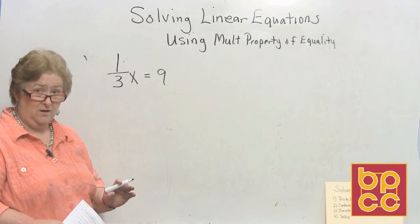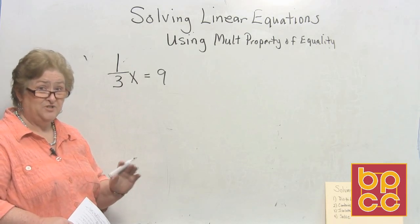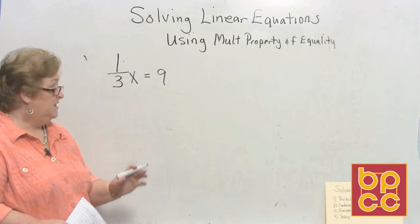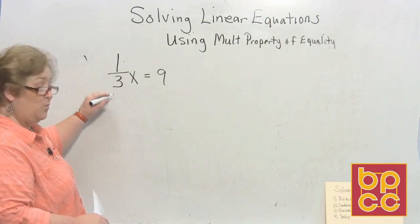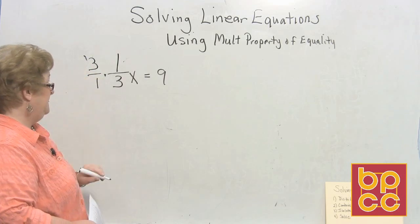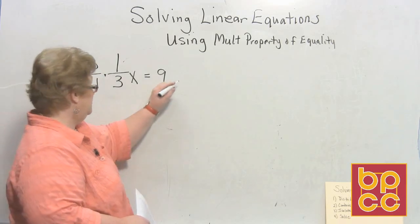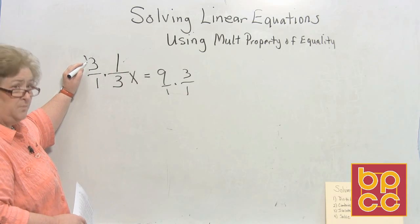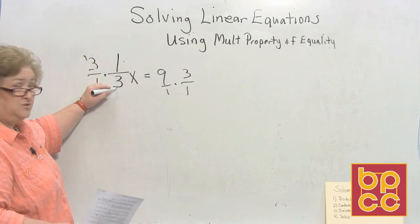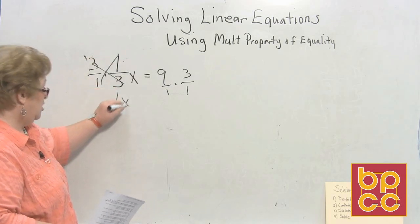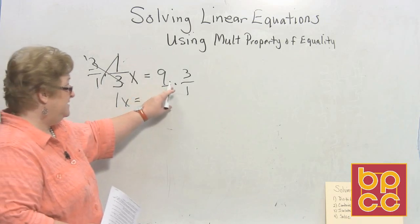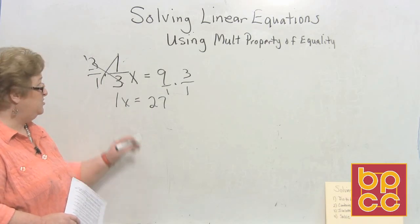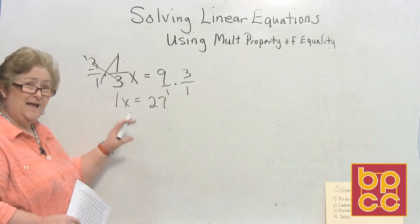So using the multiplication property of equality and knowing what we know about reciprocals or multiplicative inverses, I'm going to multiply both sides by the reciprocal. So the reciprocal of 1 over 3 is 3 over 1. I'm going to multiply. And what I do on one side, I must also do on the other side. So when you multiply this and play cross outs, 3 over 3 does cross out to 1 whole positive x. And on the right hand side, 9 times 3 is 27. So 1x is equal to 27.